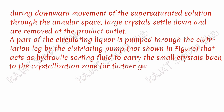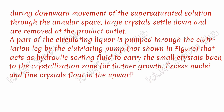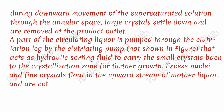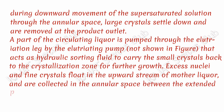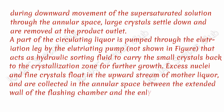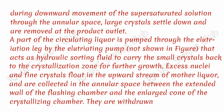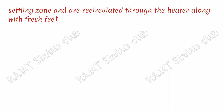Excess nuclei and fine crystals float in the upward stream of mother liquor and are collected in the annular space between the extended wall of the flashing chamber and the enlarged cone of the crystallizing chamber. They are withdrawn from the top of the settling zone and recirculated through the heater along with fresh feed.